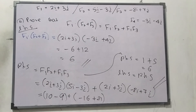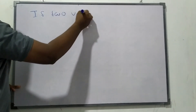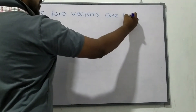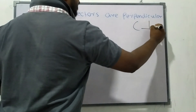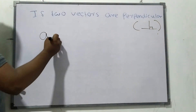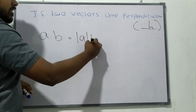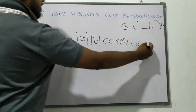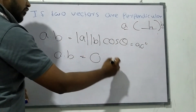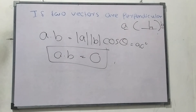Hope you are okay with the dot product of two vectors. An important property: if two vectors are perpendicular to each other, then the dot product is always zero. This always holds — if two vectors are perpendicular, the dot product equals zero.